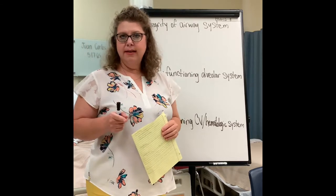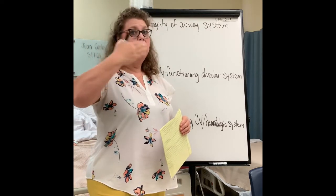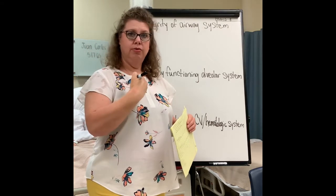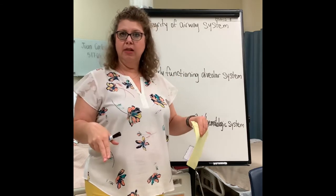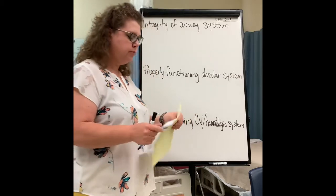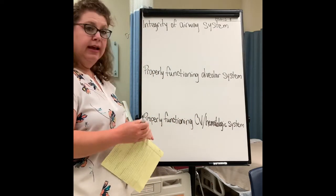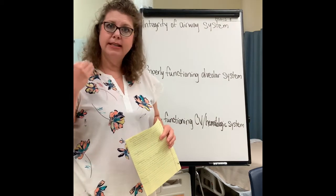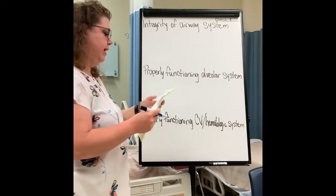Let's brainstorm what could possibly affect the integrity of the airway system. Remember, your airway system starts right here at the end of your nose, goes to the oral and nasopharyngeal cavity, down through the trachea, the bronchus, the bronchial mainstem, and into the lungs, all the way down to the alveoli. It makes sense that if you have some type of facial trauma, that's going to affect the integrity of the airway system — that affects how air gets in.